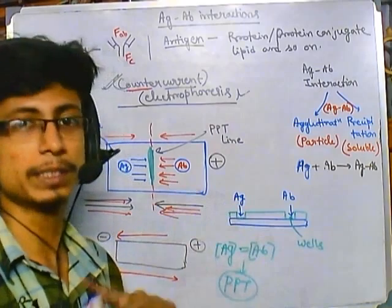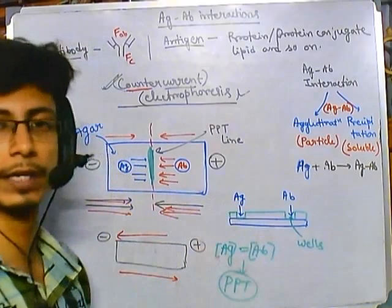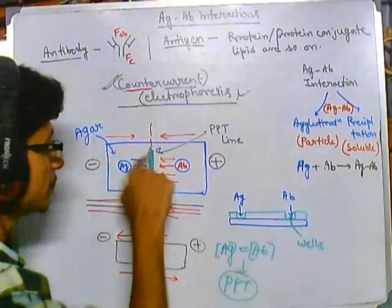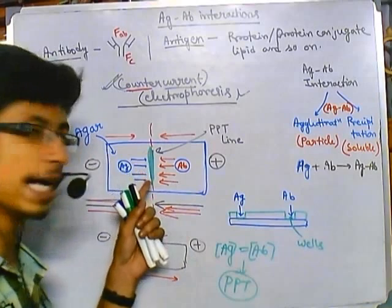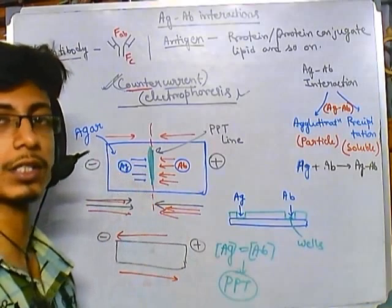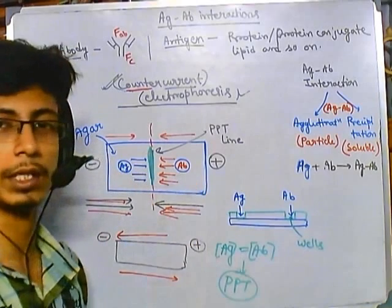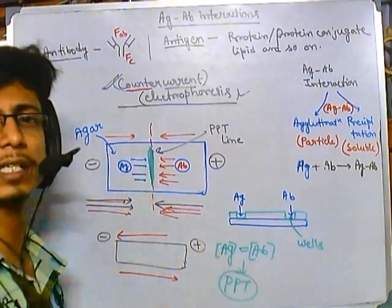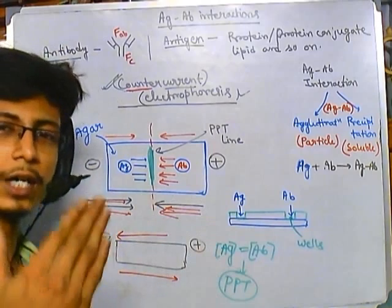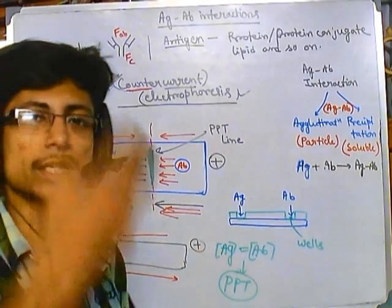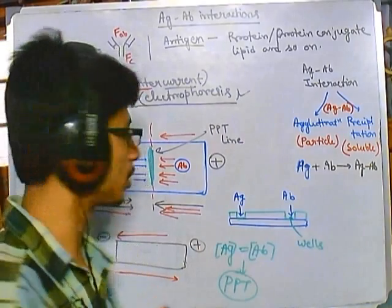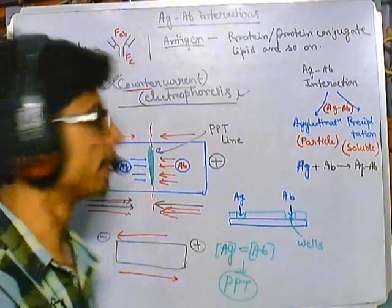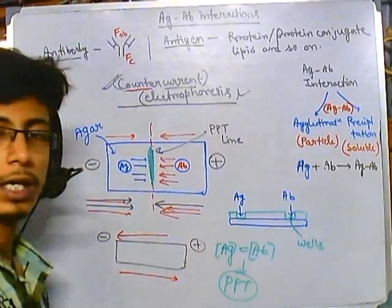This process is fairly qualitative — it gives us a yes or no answer about whether they are interacting. We cannot tell the exact concentration of antigen, but by looking at the width or depth of the precipitin line we can get a comparative idea. A broader line indicates a higher concentration of antigen, while a thinner line means a lower concentration.